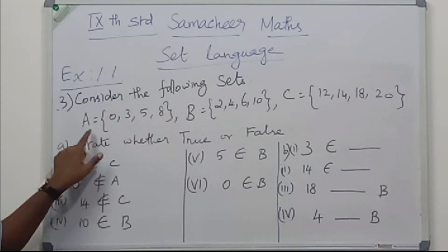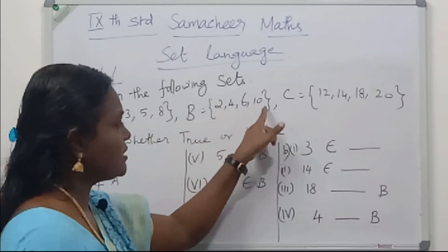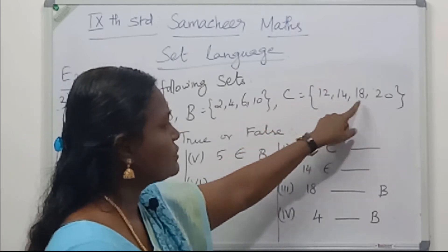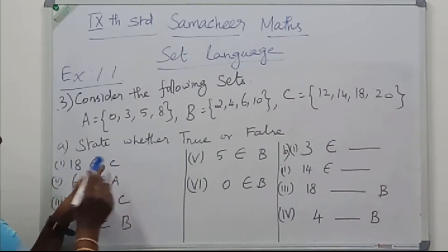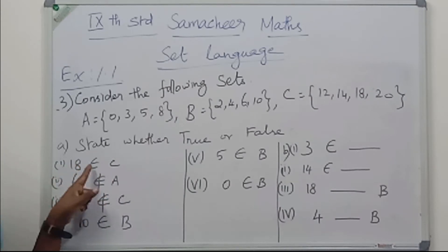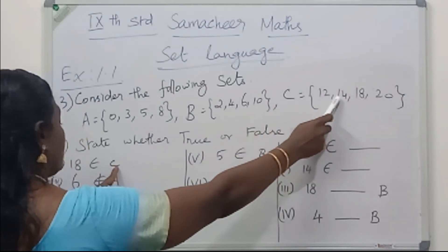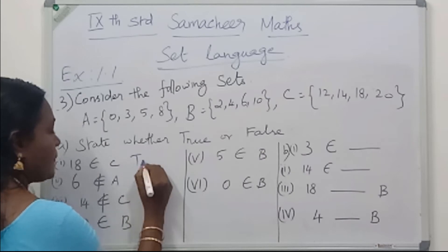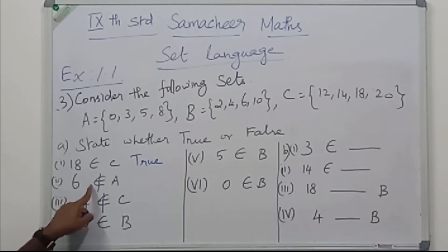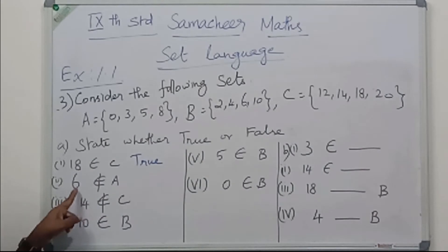See the 3rd question: consider sets A = {0, 3, 5, 8}, B = {2, 4, 6, 10}, C = {12, 14, 18, 20}. State whether true or false. (i) 18 ∈ C — 18 is in set C, so this is true. (ii) 6 ∉ A — there is no 6 in set A, so this is true. (iii) 14 ∉ C — but 14 is in set C, so 14 ∈ C. The statement 14 ∉ C is false.